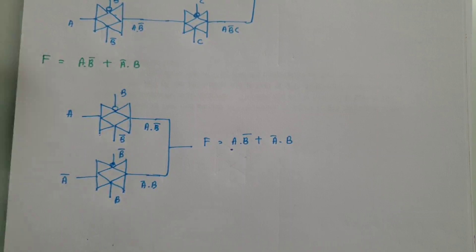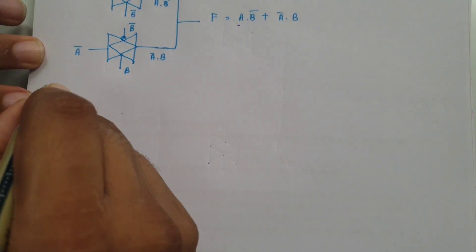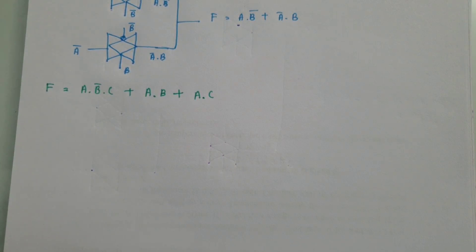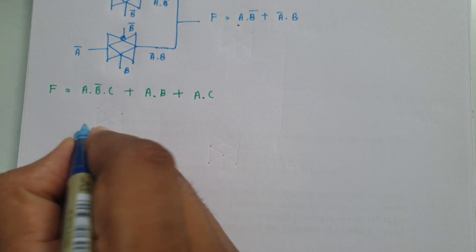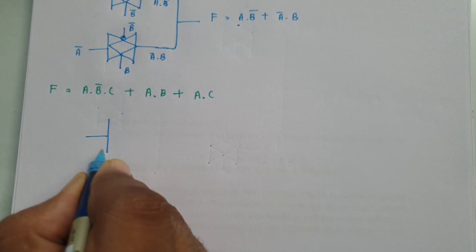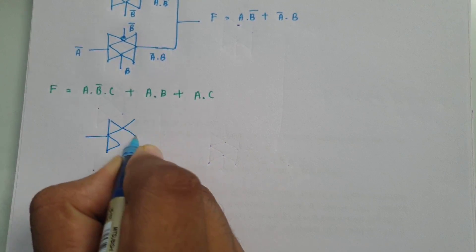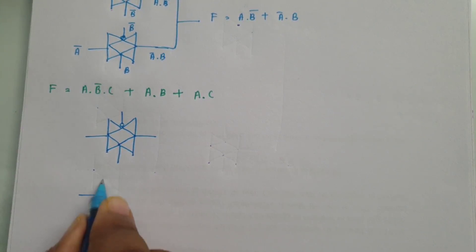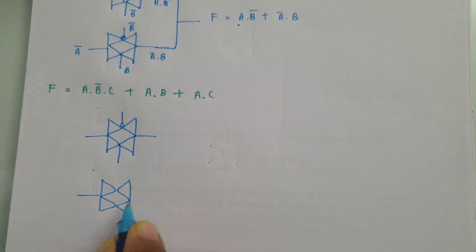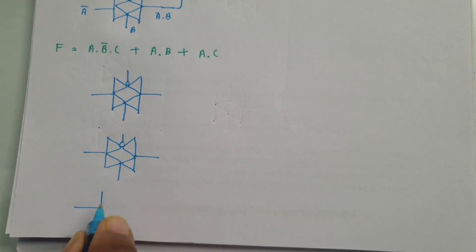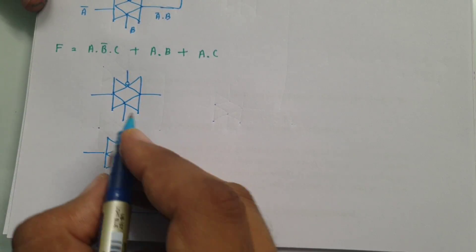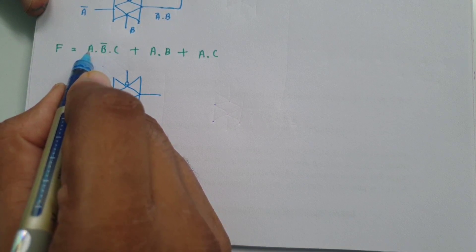Let me give you one more question to further reinforce your understanding. This third question has three product terms, so there should be three transmission gates. I am drawing three transmission gates — the first has a bubble and a straight control terminal, the second also has a bubble, and the third has a straight control terminal. Now let us say the input is a.